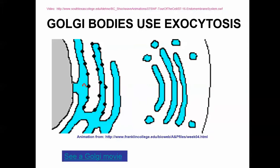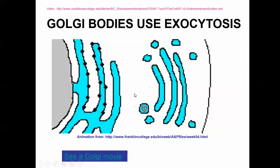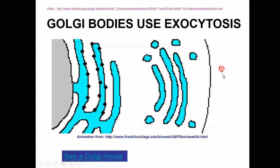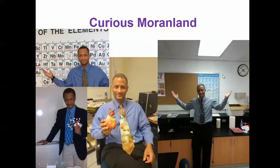One last thing — big picture: a vesicle is produced, goes from the rough ER to the Golgi. Watch this thing leave through exocytosis — that would be like a secretory cell. Brought to you by Curious Moraine Land. The next video is going to be on just some practice with it.